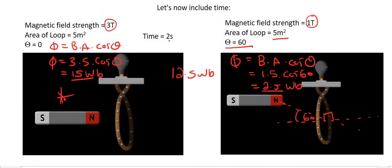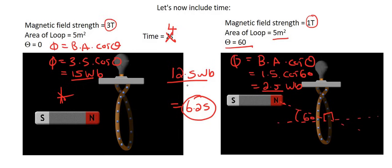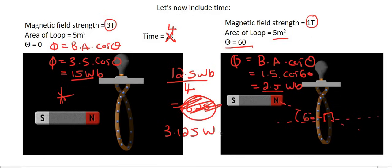To include time, we divide the change by 2 seconds, giving us 6.25. If we took that same calculation but changed the time to 4 seconds — meaning we're taking longer to move the magnet — we'd be dividing by a larger number, and instead of 6.25 we would get 3.125. So the longer the amount of time, the smaller the amount of electricity you would be able to produce. You've got to move the magnet as fast as possible.